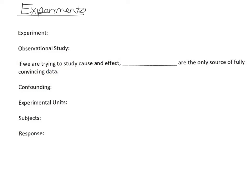This lesson will be about experiments. Before we do anything else, I'm going to define what an experiment actually is. We're going to have two types of studies in this chapter: an experiment and an observational study. An experiment occurs when a group of researchers have a group of subjects and actively impose treatments on those subjects.